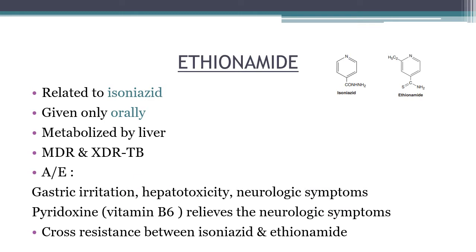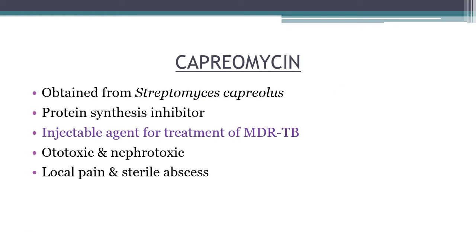Ethionamide is related to isoniazid and inhibits the synthesis of mycolic acid — note the structural similarity between the two drugs. It is given only orally, is metabolized by the liver, and is used for multi-drug resistant and extended drug resistant tuberculosis. Adverse effects include gastric irritation leading to anorexia, nausea, vomiting, hepatotoxicity, and neurological symptoms similar to isoniazid. Concomitant pyridoxine (vitamin B6) is recommended to relieve neurological symptoms. There is cross-resistance between isoniazid and ethionamide.